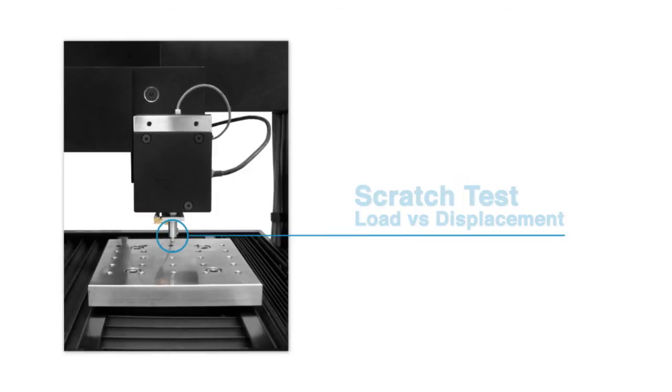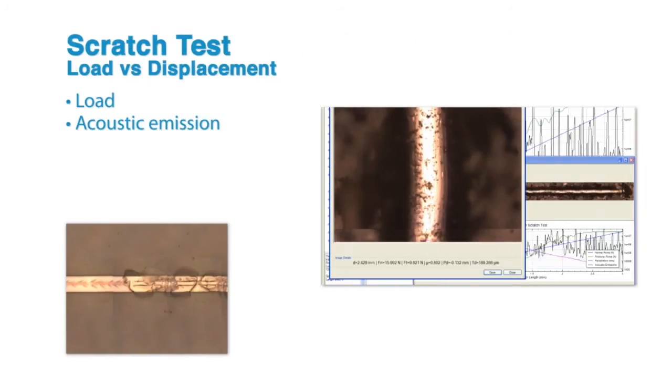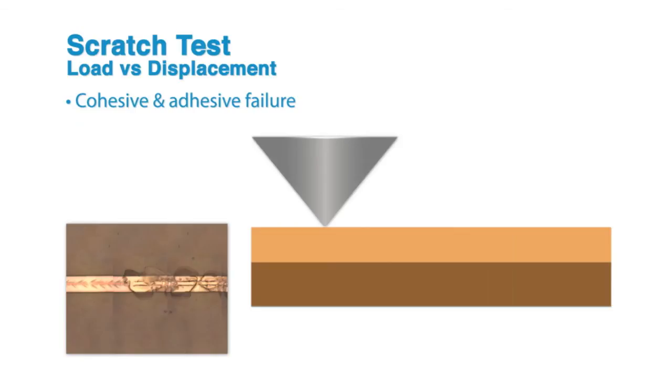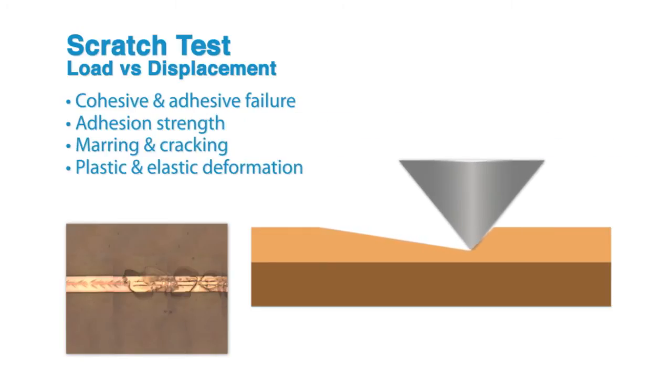The scratch test is based on load versus displacement measurement. During the test, Ninovia's software records load, acoustic emission, friction and depth. This test delivers in-depth surface data on cohesive and adhesive failure, adhesion strength, marring and cracking, plastic and elastic deformation and other measurements.